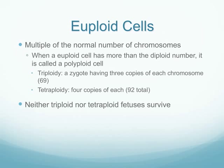When we talk about euploid cells, we mean cells with the normal number of chromosomes. The prefix 'eu-' in medical terminology refers to normal, so euploid means normal. If we have multiples — say three copies of each chromosome — we'd call it triploidy, and four copies would be tetraploidy. Those types of fetuses rarely survive. Aneuploidy, on the other hand, refers to not having the normal pairing of chromosomes, and that usually leads to death.